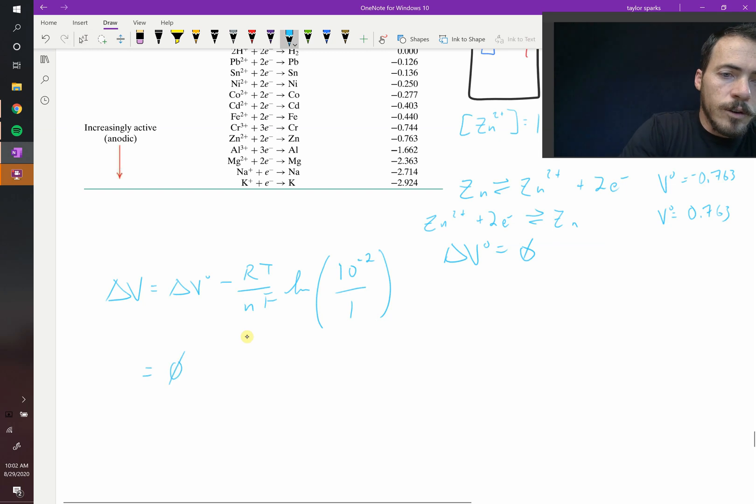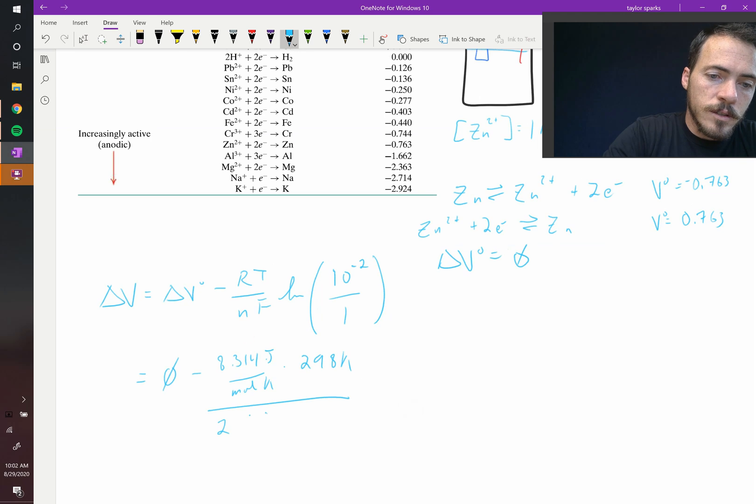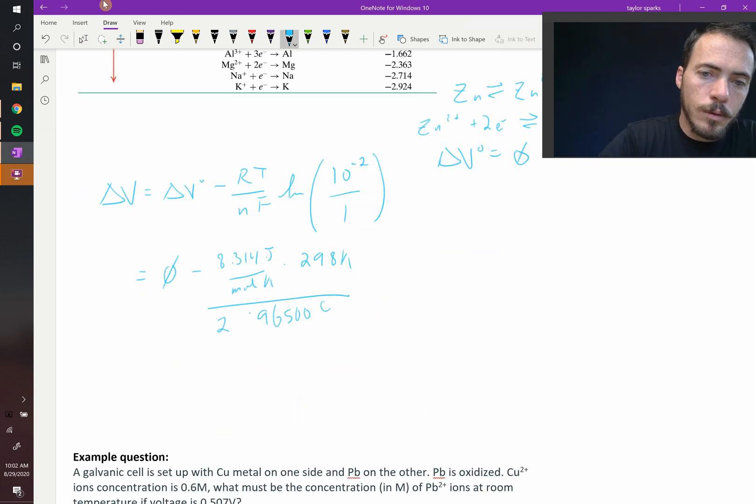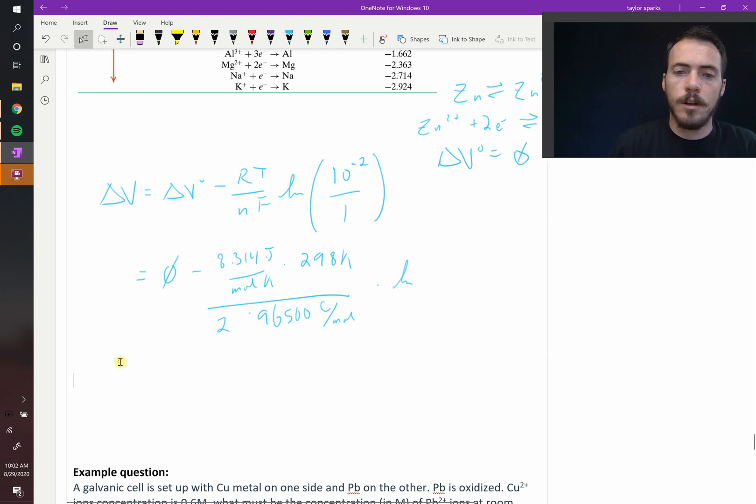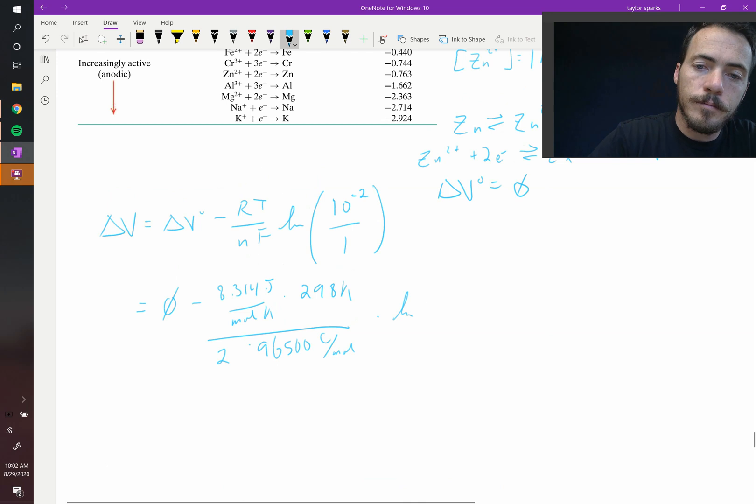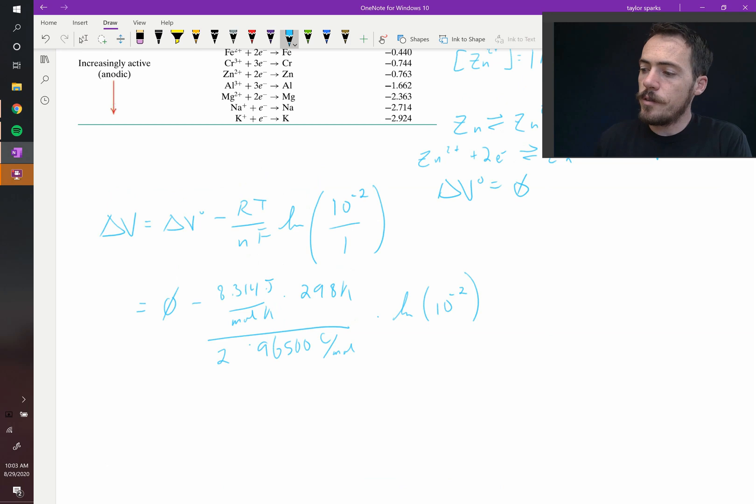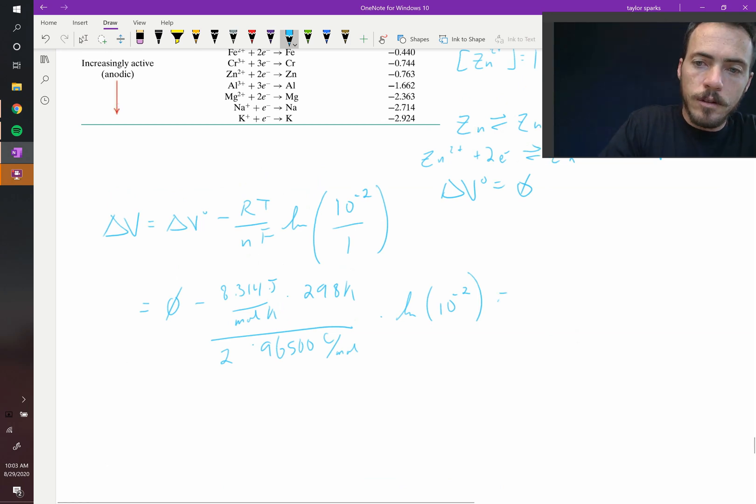So we're going to do this equals 0 minus 8.314. This is happening at room temperature. By the way, the units of that are joules per mole kelvin, multiplied by 298 kelvin. This whole thing gets divided by the number of electrons, that's 2, times Faraday's constant, which is 96,500 coulombs per mole. This will all be multiplied by the natural log of 10 to the minus 2. Let's plug those into a calculator and see what we get. Okay, what I get is a positive 0.059 volts equals 0.059 volts.